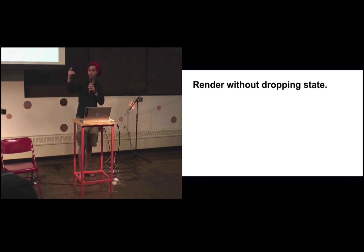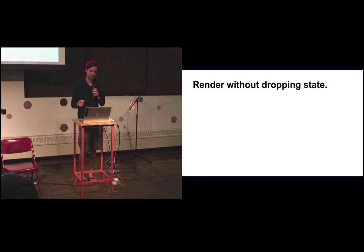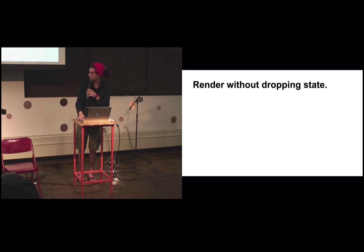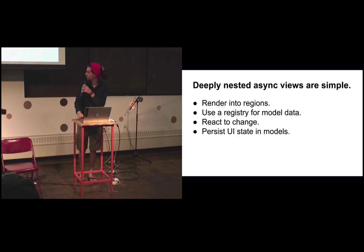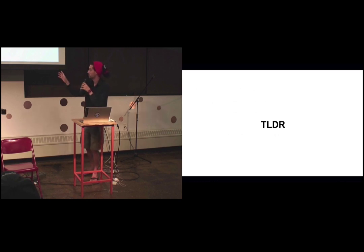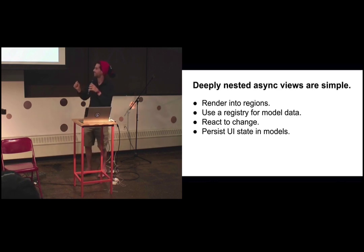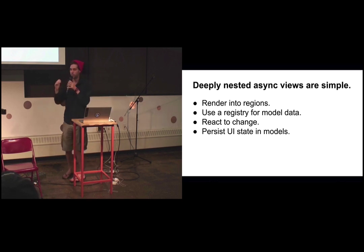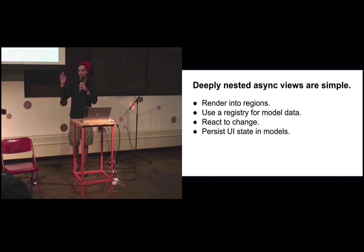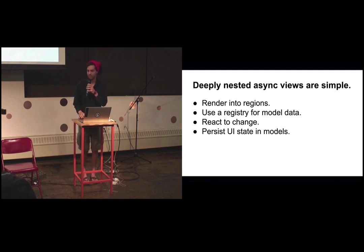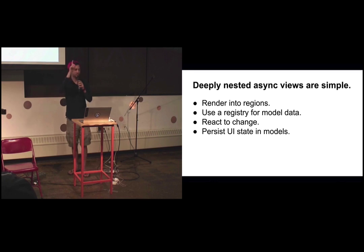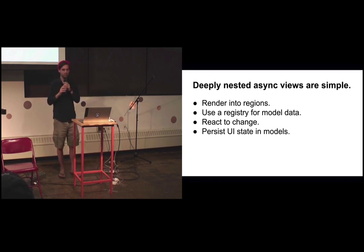Our deeply nested view — any view in that chain — can now be re-rendered without losing state, can receive asynchronous data, re-render, click on things, and not lose that state when you call re-render. It all works. So let's go over this: render into regions, use a registry for model data, register at the top, react to change, persist UI state in models. That's it. Deeply nested views — solved. No such thing as a hard UI now. Thank you guys for coming!